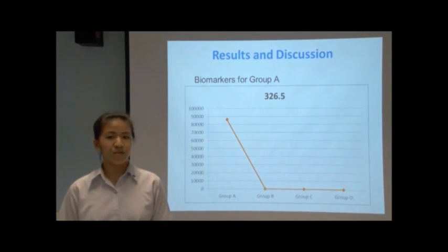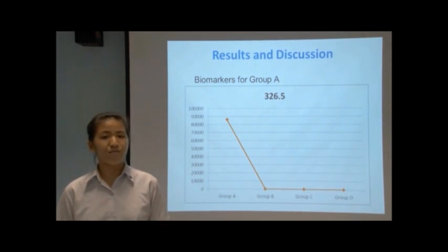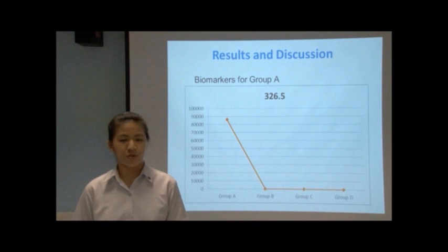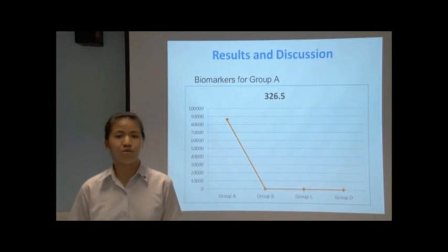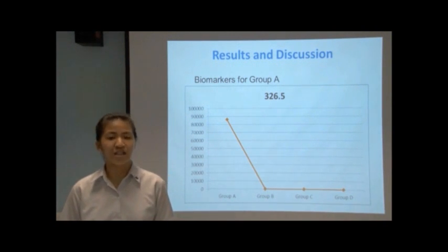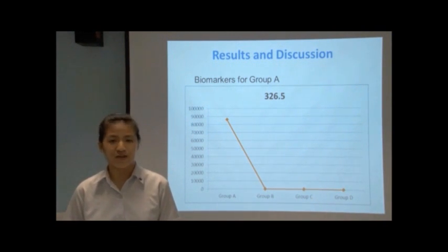The same principle applies for the second biomarker for group A: the compound with the mass-to-charge ratio of 326.5.